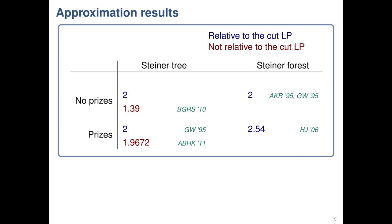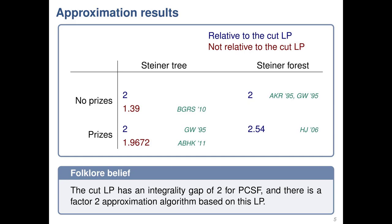For prize-collecting Steiner tree, relative to this cut LP, one can get slightly better. But for prize-collecting Steiner forest, the best known result is 2.54 by Hajiaghayi and Jain. So it's a pretty natural question of whether we can improve this 2.54 to 2, and in particular whether the cut LP would still have an integrality gap of 2 in this case.